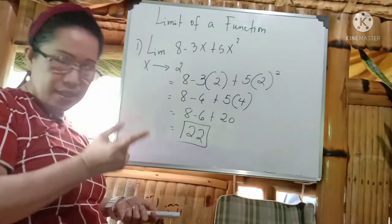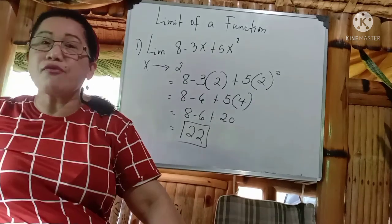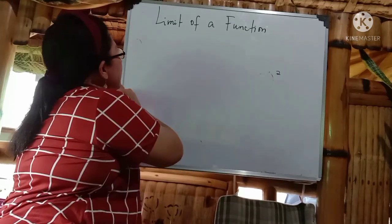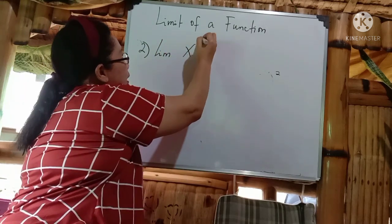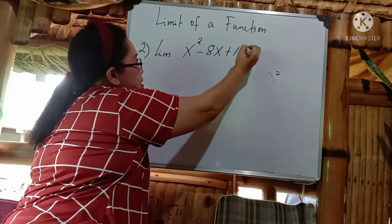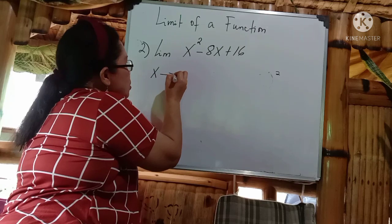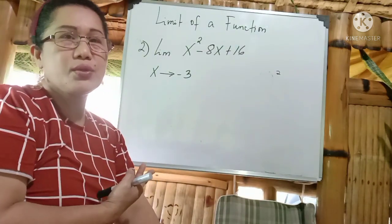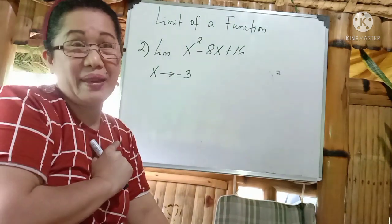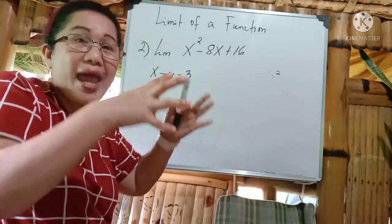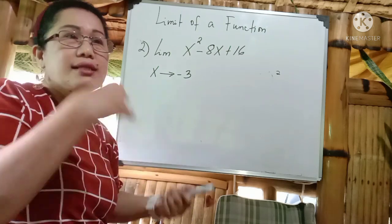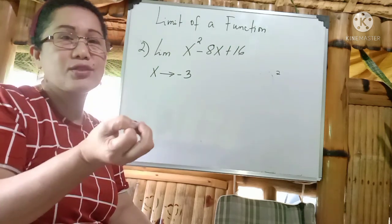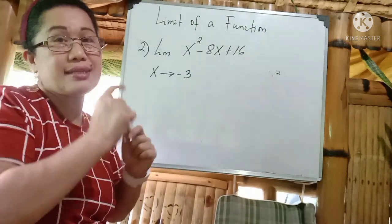I will give you Example 2, wherein you have to factor out. Example 2 is: the limit of x squared minus 8x plus 16 when x approaches negative 3. So I have x squared minus 8x plus 16. First, what you're going to do is check the equation if it is factorable. What are the factors of 16 that add up to 8? That is 4 and 4.